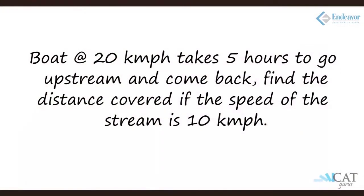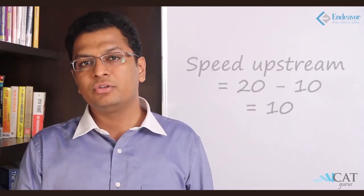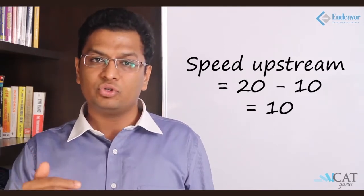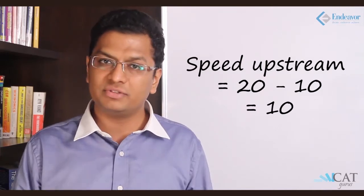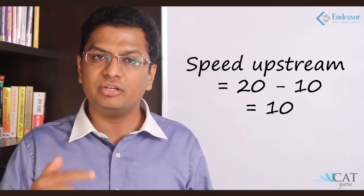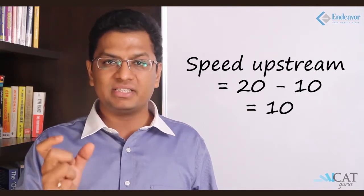Let's add the speed of the water. The boat is moving at 20 kilometers per hour, it takes 5 hours for the boat to go upstream and come back. Find the distance covered if the speed of the stream is 10 kilometers per hour. Now the boat is at 20 km/h and the stream is at 10 km/h, so net net you will be moving only 10 kilometers per hour going upstream — you have to conquer that 10 km of the stream, and then your additional 10 km is what makes you actually move on the water. So the net speed upstream is 10.